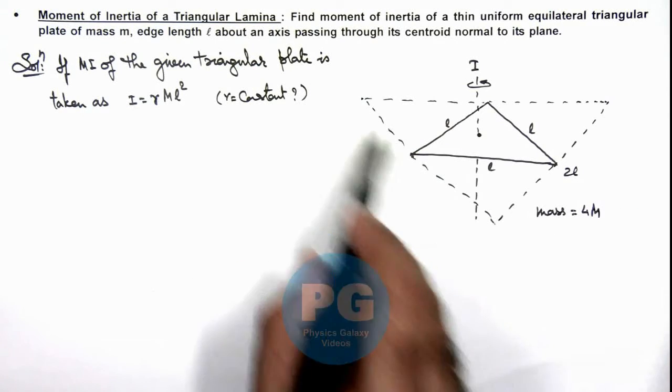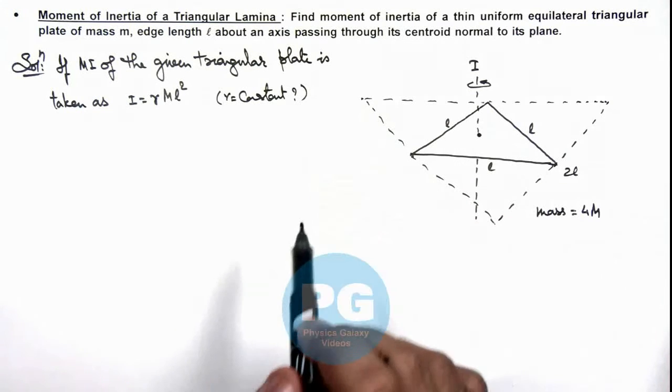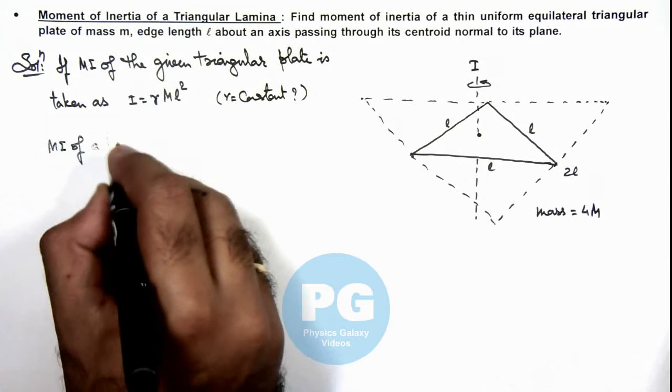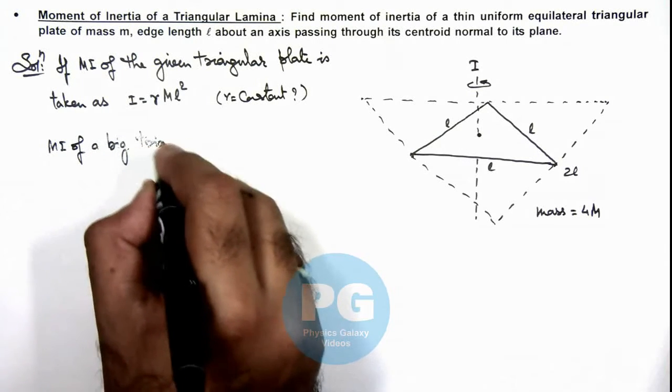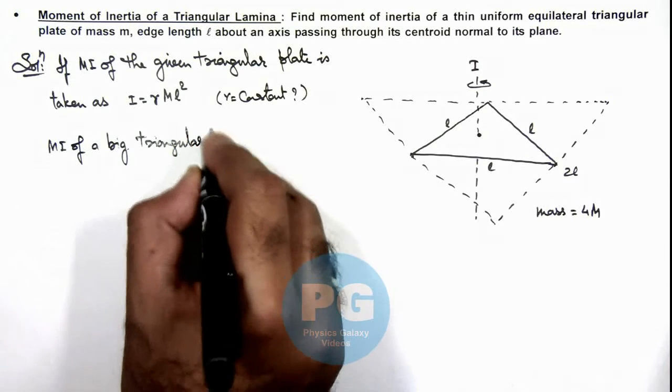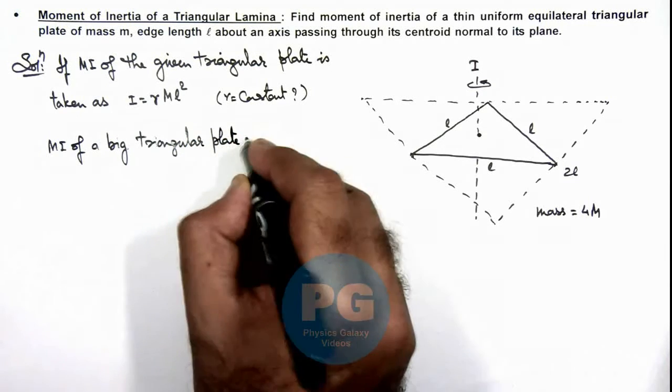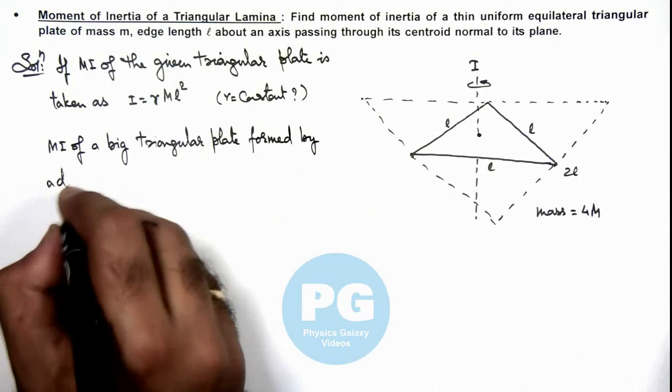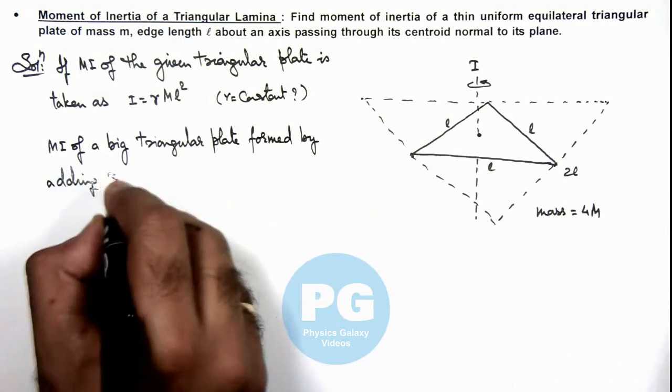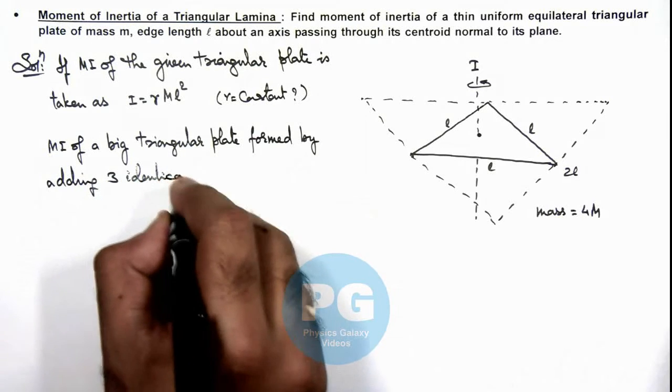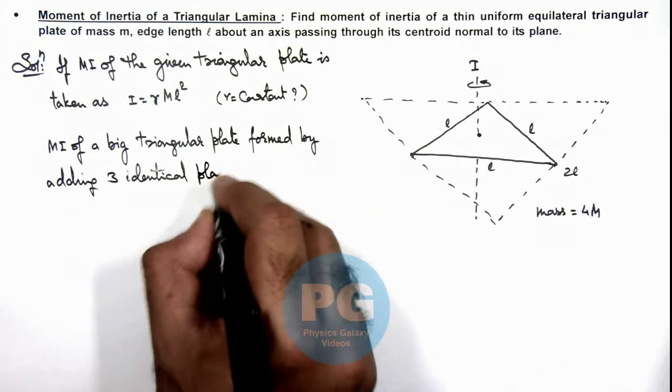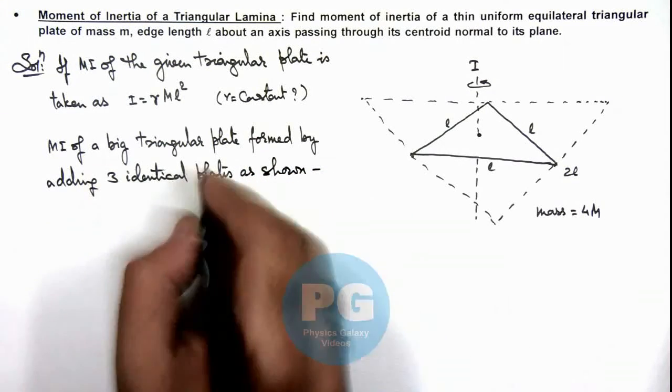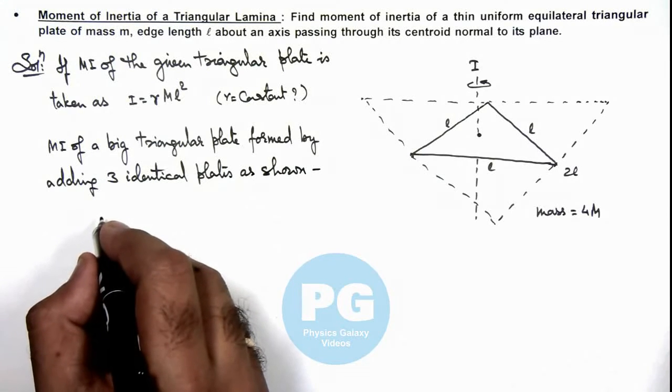So in this situation for this big plate we can say, if we calculate moment of inertia of a big triangular plate formed by adding three identical plates as shown, then we can calculate this moment of inertia.